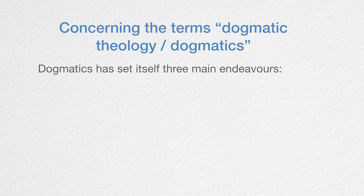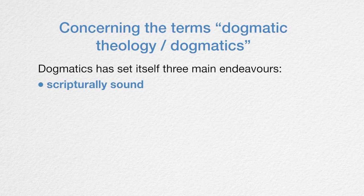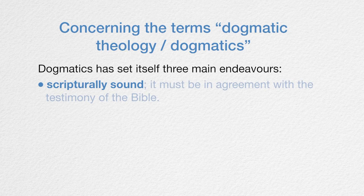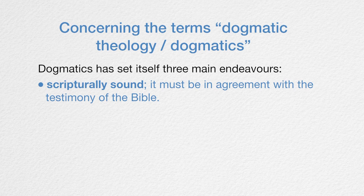Dogmatics aims to achieve three main endeavors. First, it must be scripturally sound — in other words, it must be in agreement with the testimony of the Bible. As a church, we accept that the Bible is the source of our doctrine; we don't get our doctrine from anywhere else. So it must be scripturally sound.